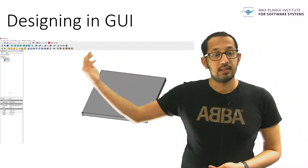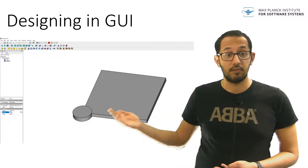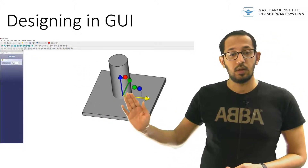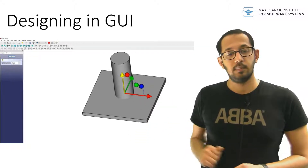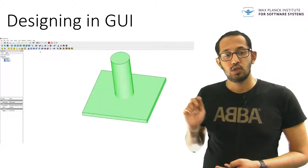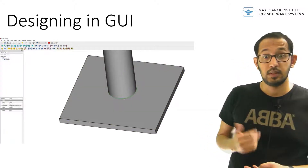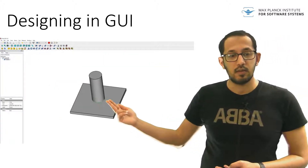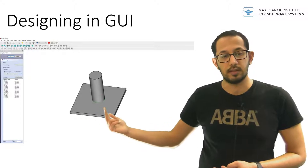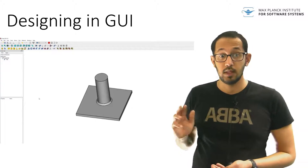Next, we make a cylinder. It's very small right now, but we increase the radius and give it a bigger height. We place the cylinder on the center of the base, on top of it, and then union the cylinder and the base into one final object. Next, we select the edge connecting the base to the cylinder and fillet it for a smooth edge. And there we have our toilet paper holder in GUI.